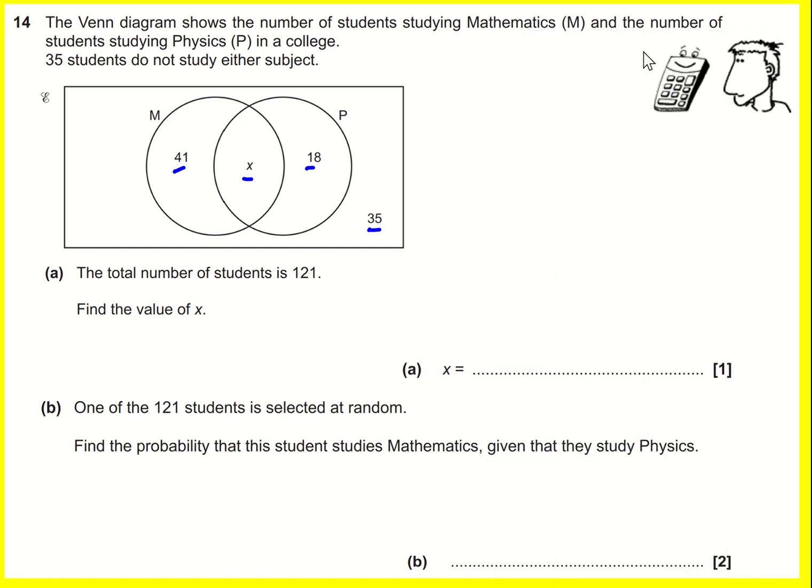Equals 94, so x is going to be 121 minus 94. You can do that on the calculator. I can see that it's going to be 6 to 100 plus 21, which is going to be 27.